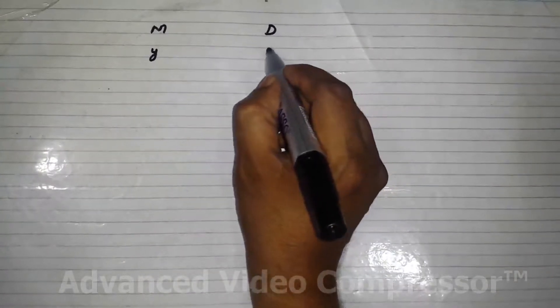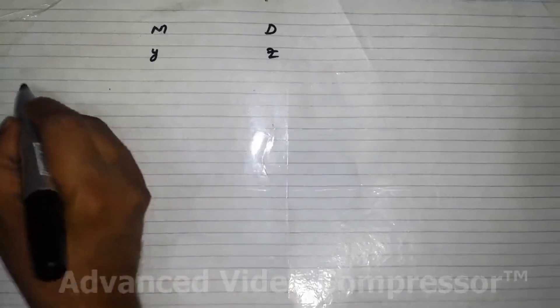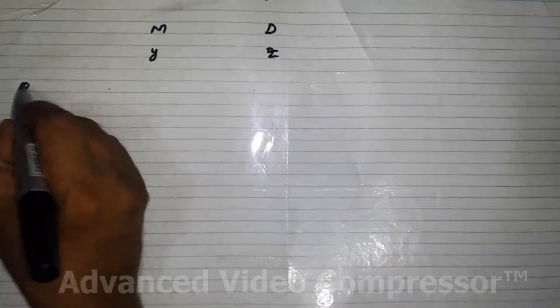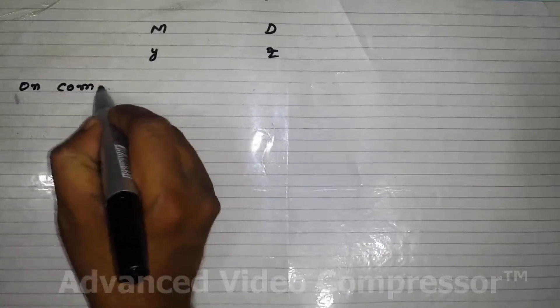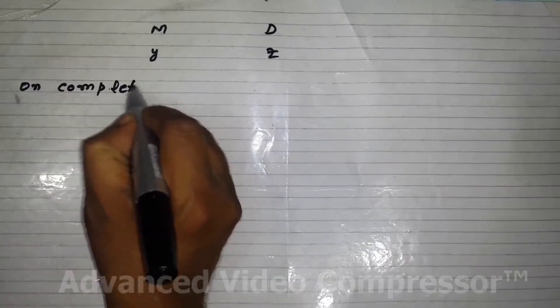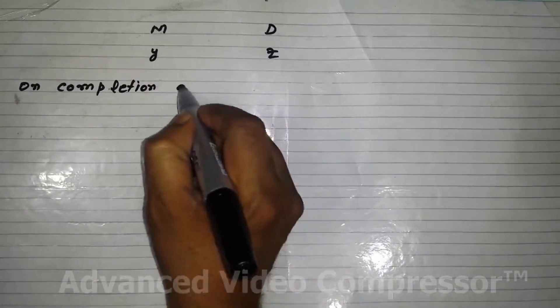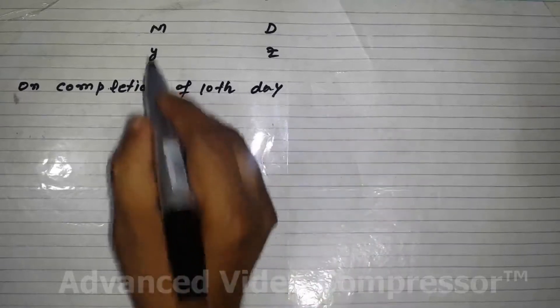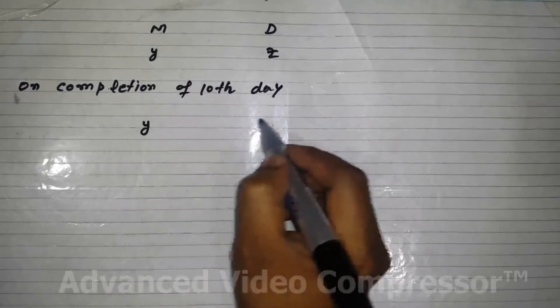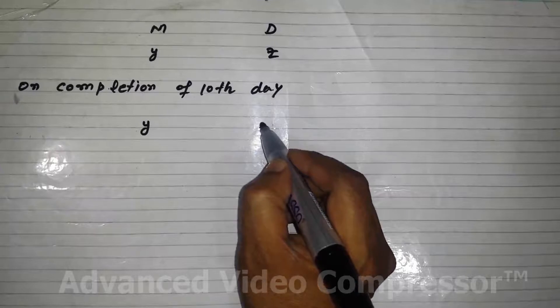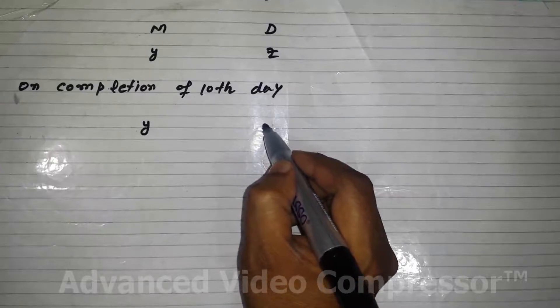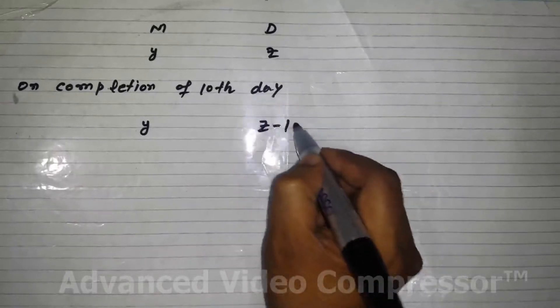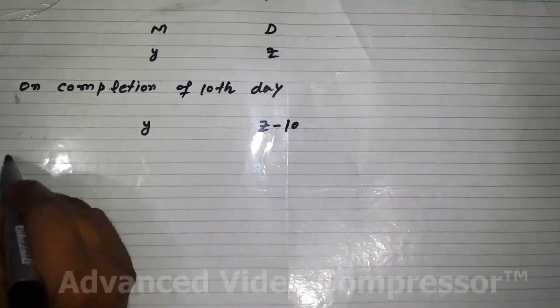Men were still there, Y. But the 10 days have gone, so now remaining days are left as Z minus 10. On the next day, one-fifth of the men leave.